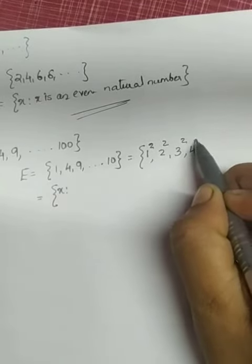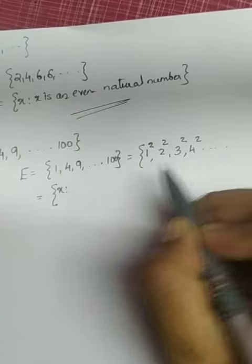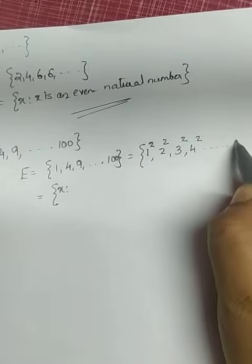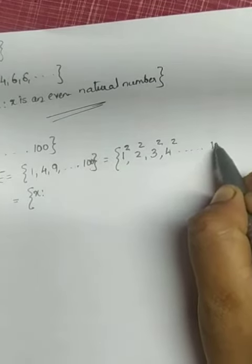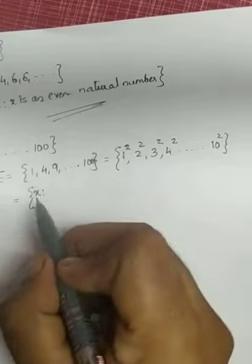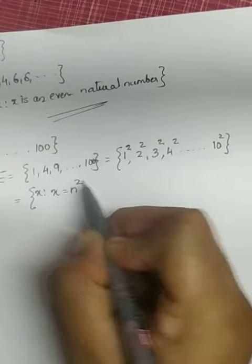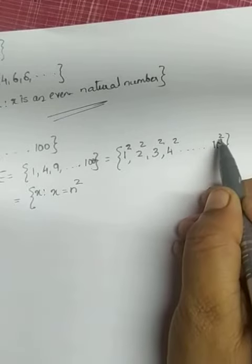The next would be 4 squared, etc. The last number is 100, which we write as 10 squared. So what will be the set builder form? Set of all x such that x = n². The square remains the same, the power remains the same for all numbers. That's why we're writing n². What's the restriction for n?